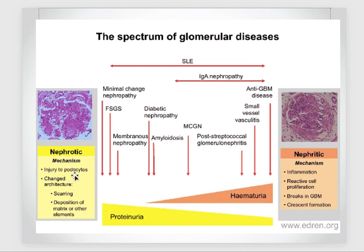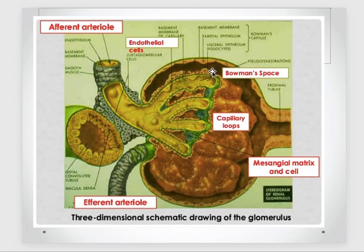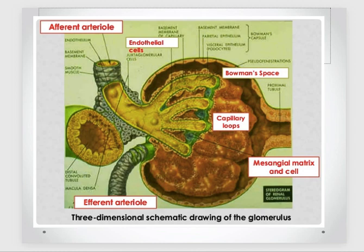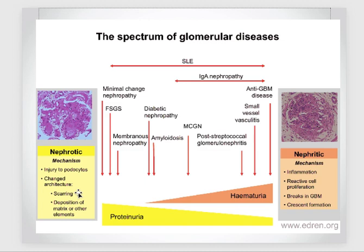In nephrotic syndrome there is injury to the podocytes. When there is podocyte injury, proteins start leaking out. One very important point to remember: proteinuria is the hallmark of nephrotic syndrome.